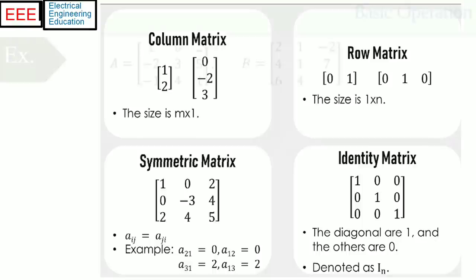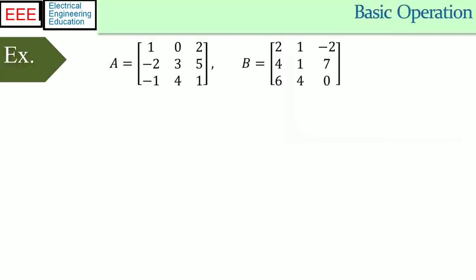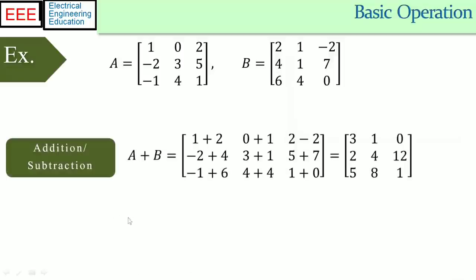The basic operations include addition, subtraction, multiplication, inverse, etc. Two matrices can be added or subtracted only if they have the same dimension. A and B are three by three square matrices and the addition operation is shown where the corresponding elements are added together. In scalar multiplication, each entry in the matrix is multiplied by the given scalar.